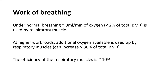Under normal breathing, your lungs use around 3 mL of oxygen every minute, which is less than 2 percent of the total basal metabolic rate. However, at higher workloads, as you start breathing faster, the additional oxygen being absorbed is used up by your respiratory muscles, causing a plateau effect. Your respiratory muscles can sometimes require more than 30 percent of the total basal metabolic rate, and the efficiency of the respiratory muscles is only around 10 percent.